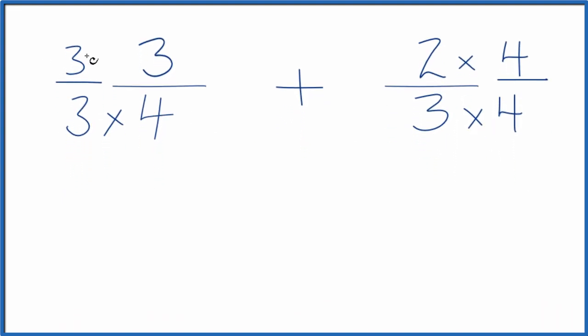But now, 3 times 3 is 9. 3 times 4, that's 12. Over here, 2 times 4 is 8. And 3 times 4 is 12.